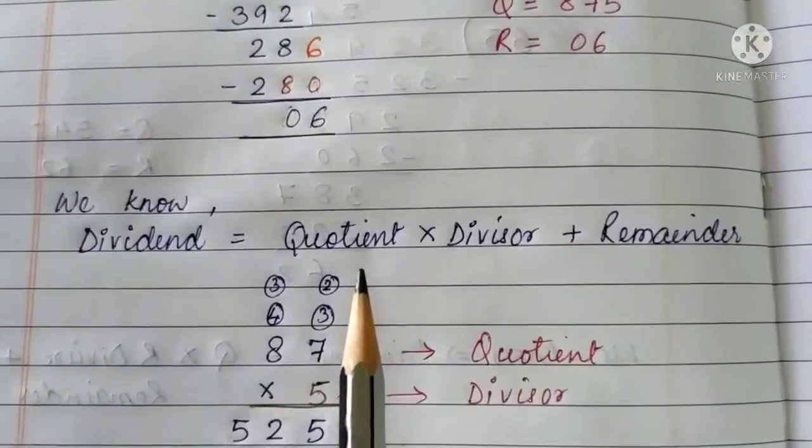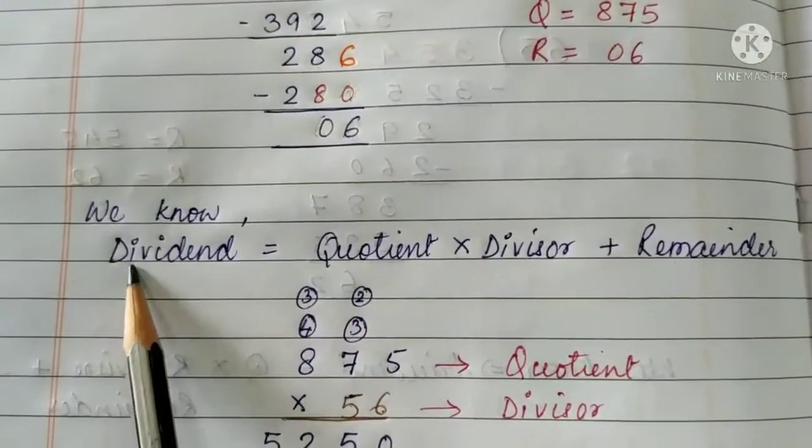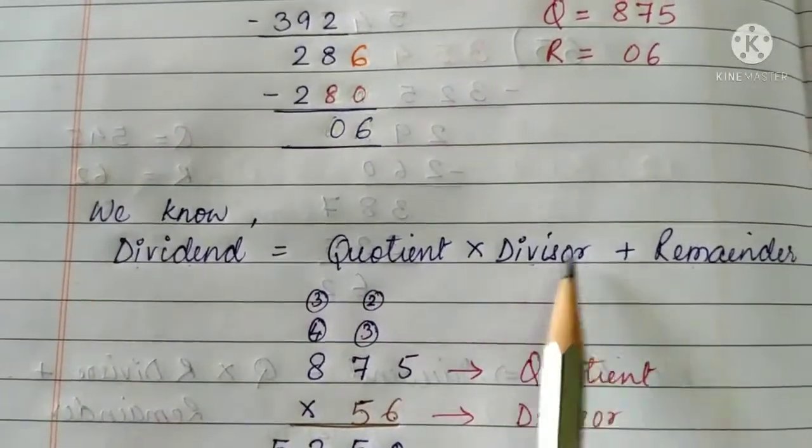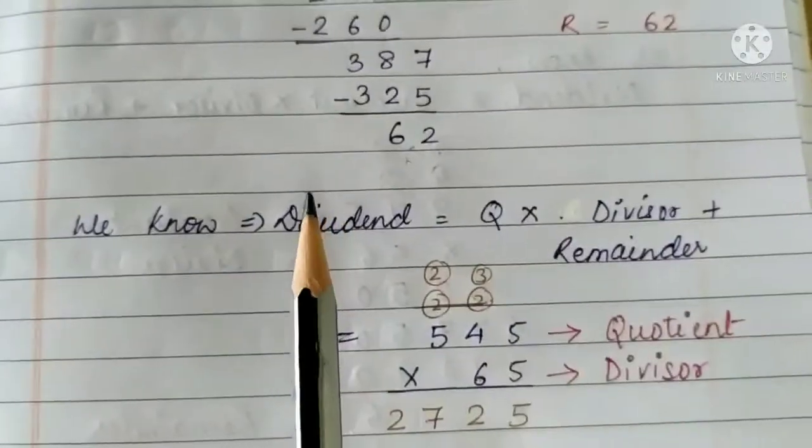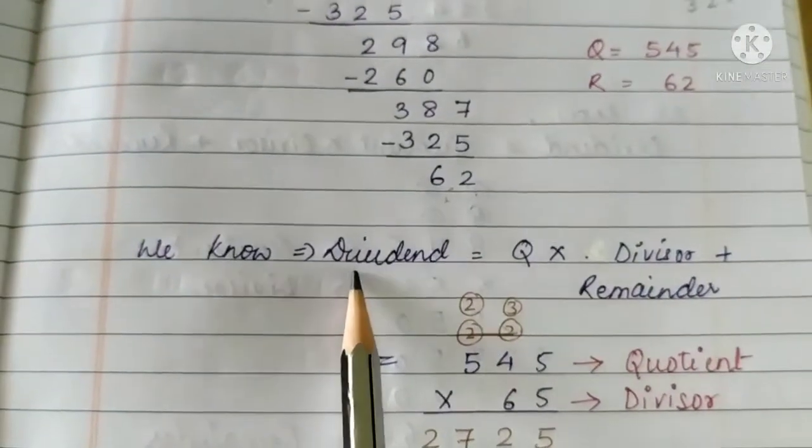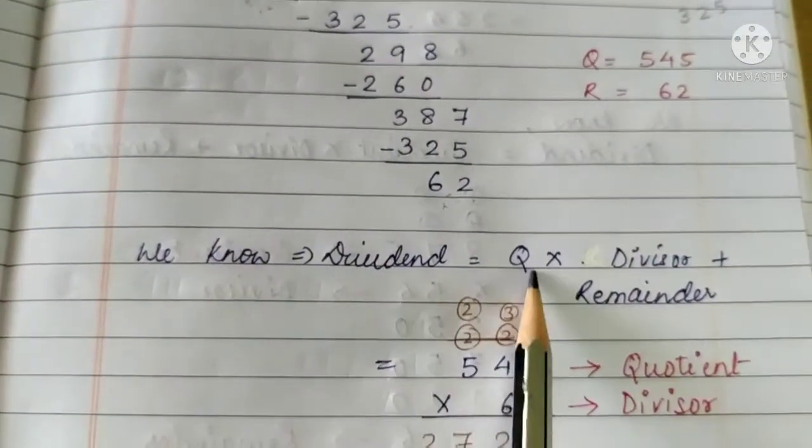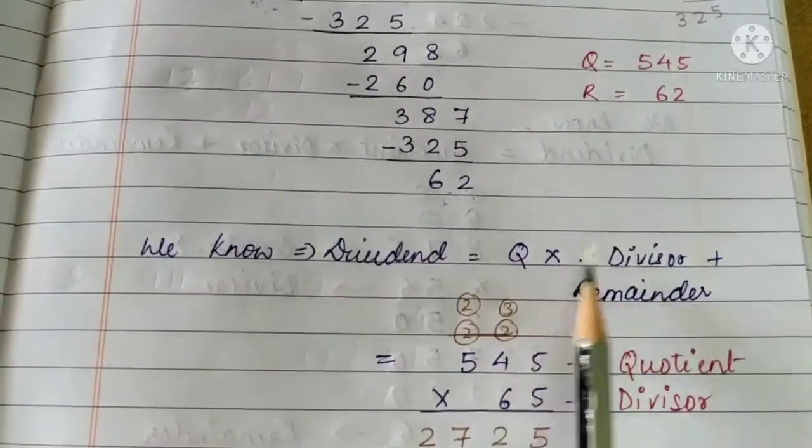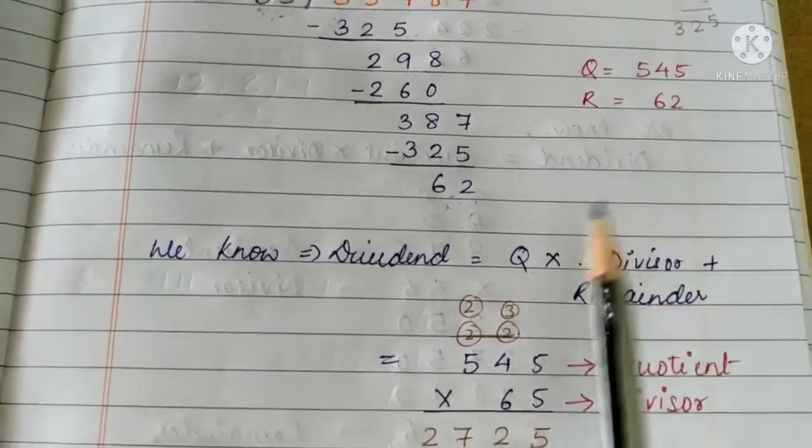The formula is, we know dividend equals to quotient multiplied by divisor plus remainder. So, here I have written dividend equals to Q. Q stands for quotient, multiplied by divisor plus remainder.